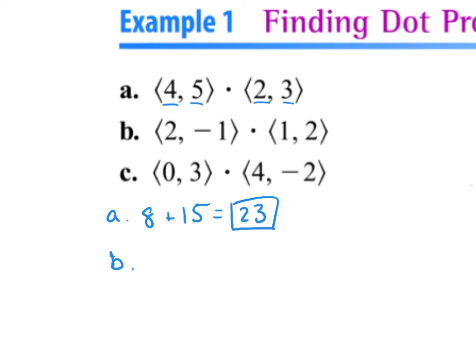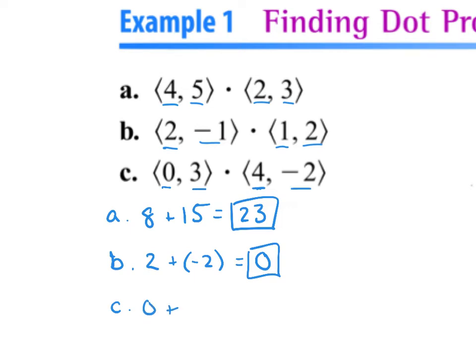For example b, the first times the first: 2 times 1 is 2, plus negative 1 times 2, which is negative 2. So 2 plus negative 2 equals 0. For example c, 0 times 4 is 0, plus 3 times negative 2 is negative 6, giving us negative 6.